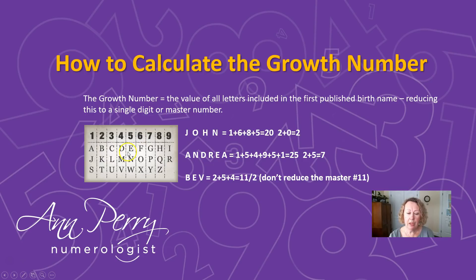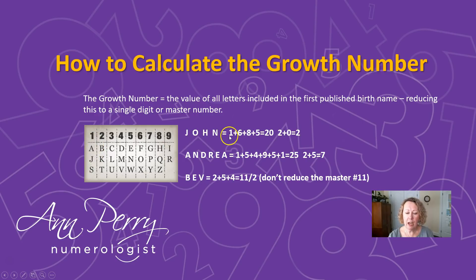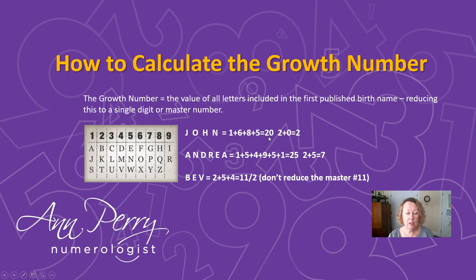We're going to look at the Pythagorean alphabet, where each letter vibrates at a different vibration. For example, A, J, and S vibrate at the number one; B, K, and T vibrate at the number two, and so on. For the name John: J vibrates at one, O at six, H at eight, and N at five. We add those together to get twenty, then reduce it — two plus zero equals two.